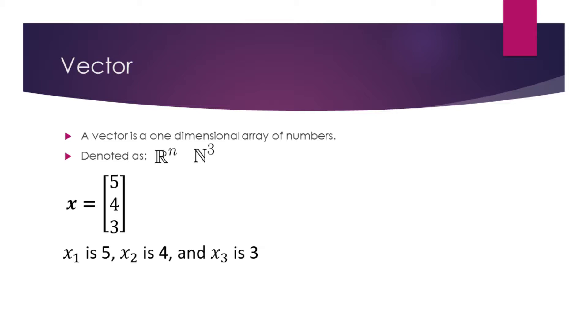Below you can see an example of a vector with three natural numbers. We can identify each individual element of the vector by writing the vector's name in italic typeface with a subscript. For example, x subscript 1 is 5, x subscript 2 is 4, and x subscript 3 is 3.